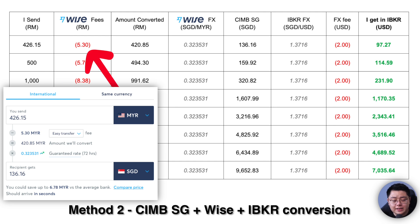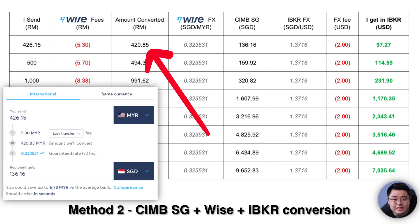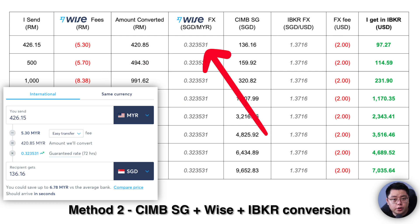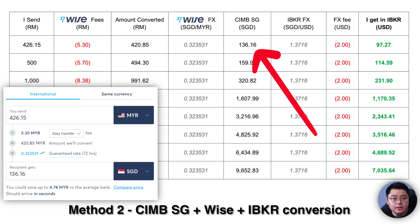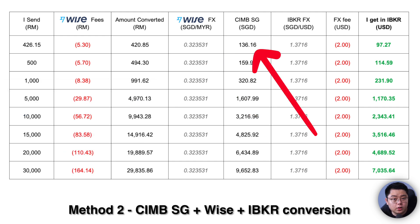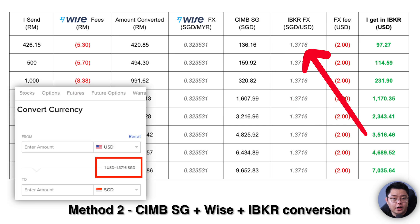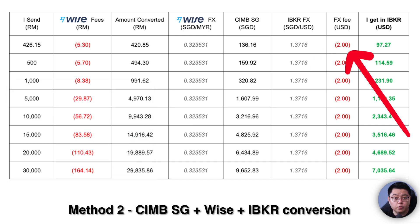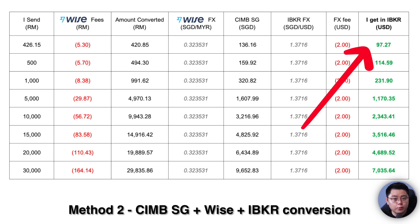Since you are sending ringgit to CIMB Singapore in Sing dollars, you are making an international transfer, so fees are slightly higher. For the equivalent 426 ringgit 15 cents, Wise charges a transfer fee of 5 ringgit 30 cents. That amount converts at 0.323531 Sing dollar per ringgit, giving 136 dollars and 16 cents SGD. You then do a local transfer from CIMB Singapore to IBKR's SGD account, then convert from SGD to USD inside IBKR at a rate of 1.3716 USD per SGD, incurring another 2 USD conversion fee.